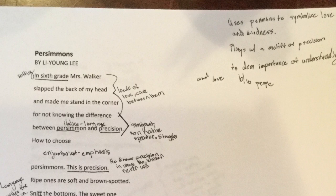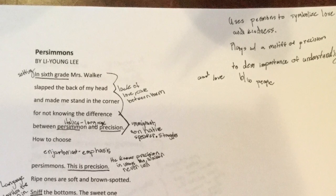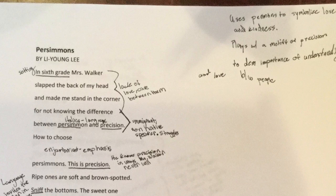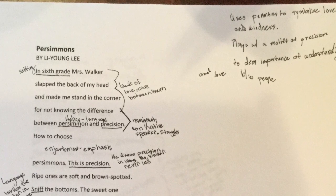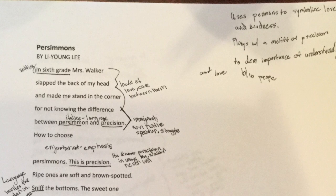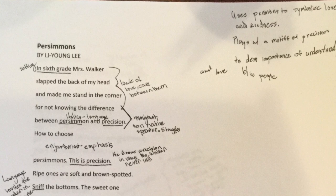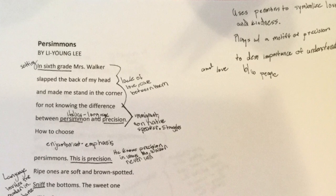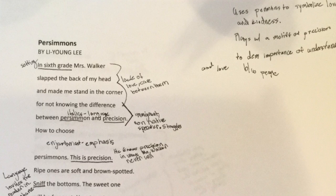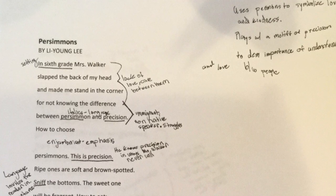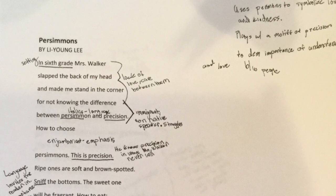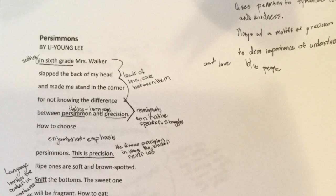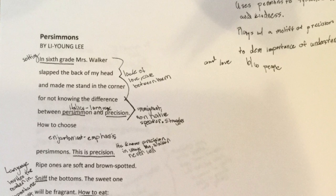It's interesting that he uses italics — this is a structural element that exists throughout the rest of the poem. He italicizes certain words to show their importance within language. The next important aspect is enjambment: he says "how to choose," leaves a space, then "persimmons," conveying that "how to choose persimmons" is precision. The enjambment is important because it shows emphasis on how precision exists on multiple levels. Such a simplistic understanding of precision is just knowing the difference between how to say words, but real precision has real-world implications — like being able to choose a fruit that is particularly ripe. In this way, he knows precision in ways that Mrs. Walker never would.